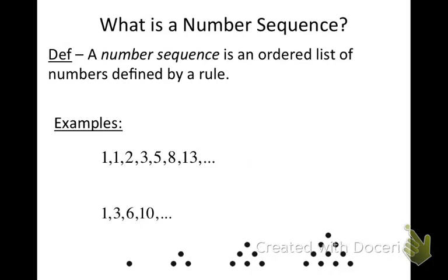I want to explain what I mean by n dots per side, because that encompasses something you need to know about sequences in general. Every time we work with sequences, we're going to use the variable n to mean a very specific thing: a term number in a sequence. Whenever you see n in this chapter, it's always going to represent a term number.